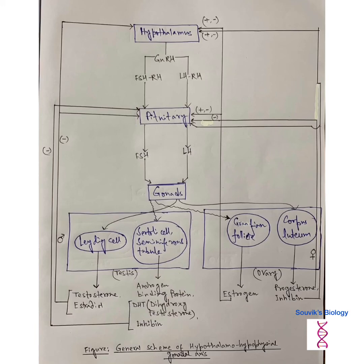As well, when the synthesis becomes too low, then they give the positive feedback on pituitary or hypothalamus and they release this hormone. In this way, body always maintains homeostasis. This is the general scheme of hypothalamo-hypophysial gonadal axis. Hope you understand.